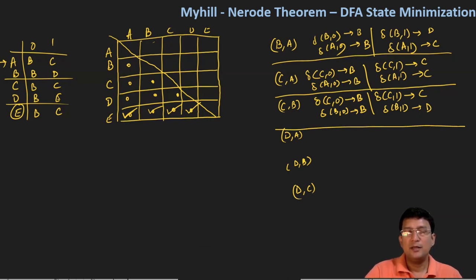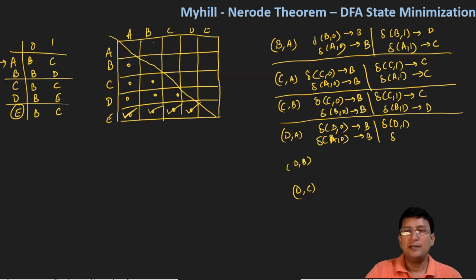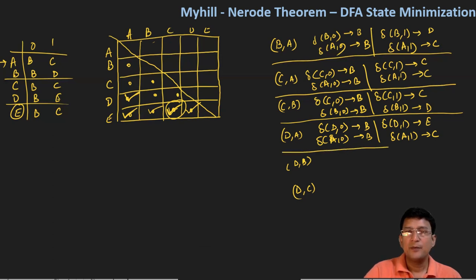Now for the DA pair. D on zero goes to B and A on zero also goes to B — cannot distinguish. Then D on one goes to E and A on one goes to C. The EC entry is already marked, so I can mark DA as well.